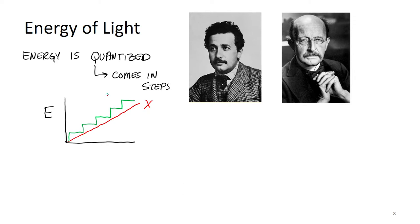Really, how nature works is that energy comes in steps. You can't go anywhere along this continuous line — if you want to increase the energy of your system, you have to go to the next step. There's no half steps, no quarter steps. That's what quantized means: it comes in specific discrete steps, just like the difference between analog and digital measurements.